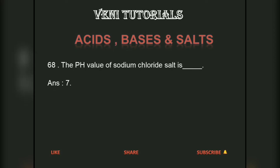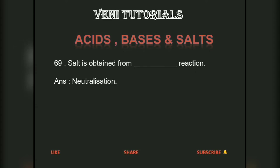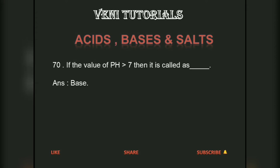The pH value of sodium chloride salt is 7. Salt is obtained from a neutralization reaction. If the value of pH is greater than 7, then it is called a base.